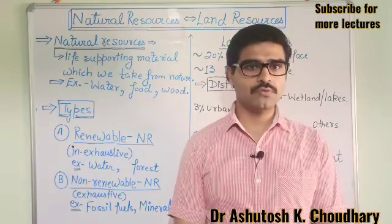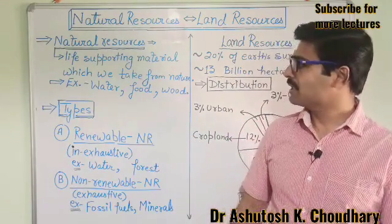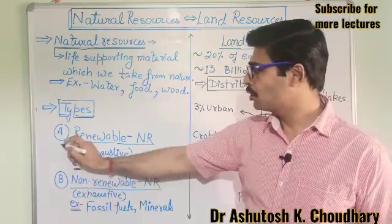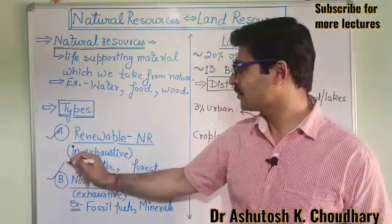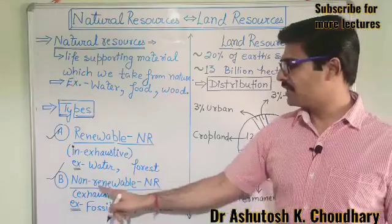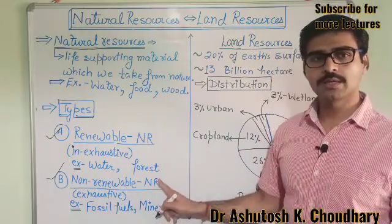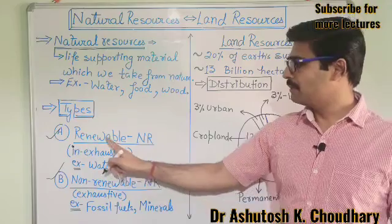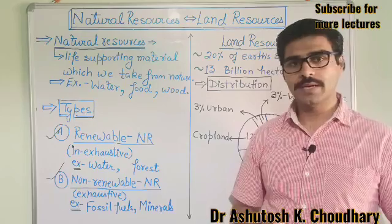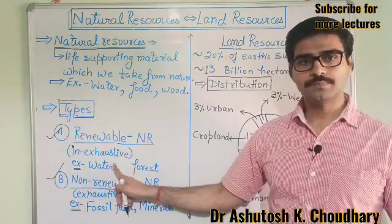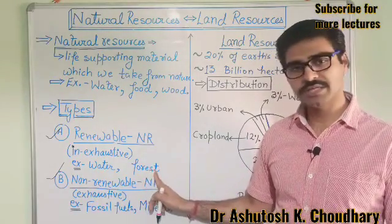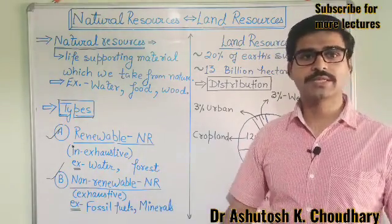Now we can classify or divide natural resources broadly into two different categories. First is renewable natural resources and second is non-renewable natural resources. Renewable natural resources means which can be renewed and are inexhaustible. For example, water, forest, air, solar energy, biomass energy — so many examples are there.